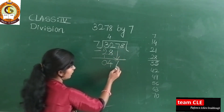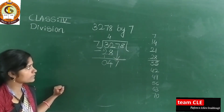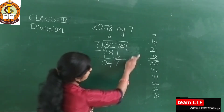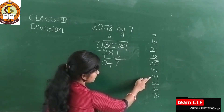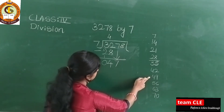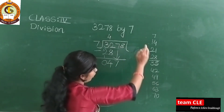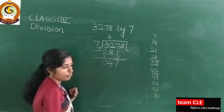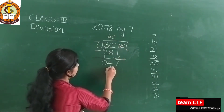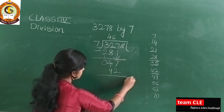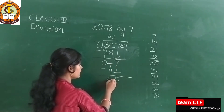Bring down the next digit 7, so it becomes 47. Check the 7 times table — 47 is not there; 42 is there and 49 is too big. The nearest small number is 42. So 7×6=42. Subtract: 7 minus 2 is 5, and 4 minus 4 is 0.